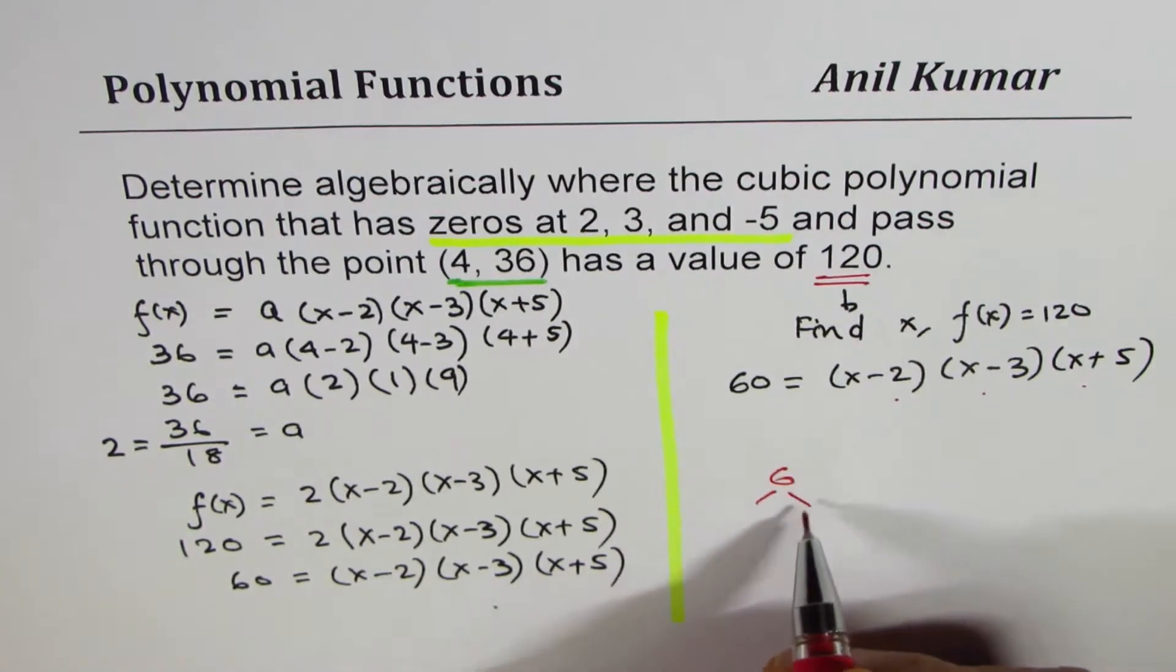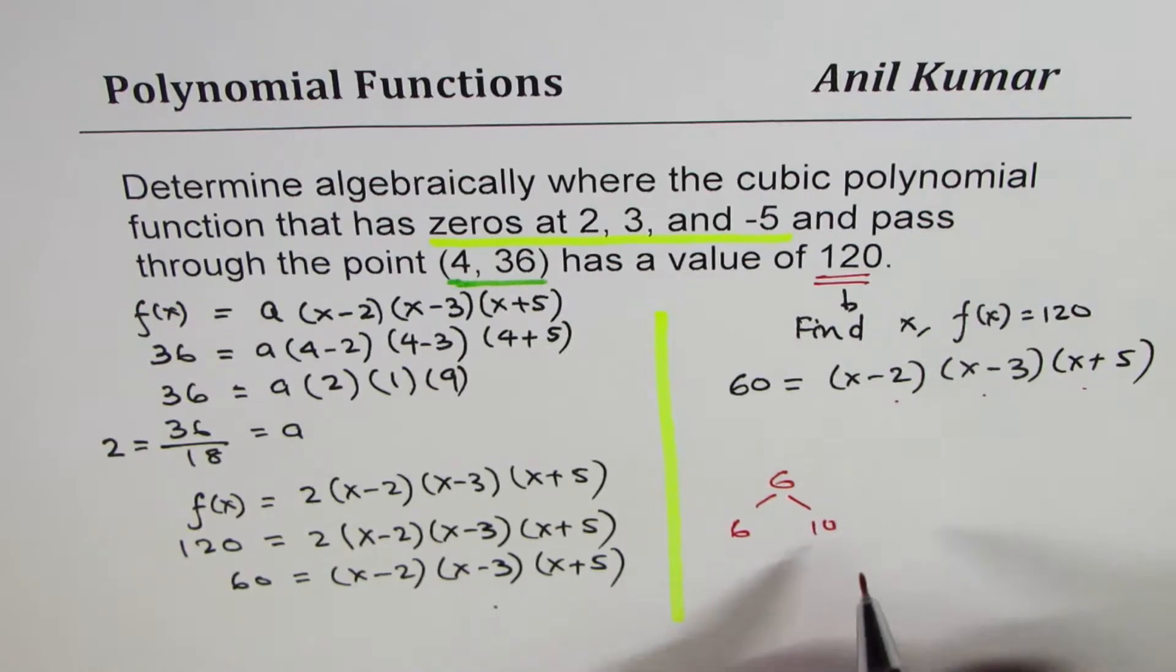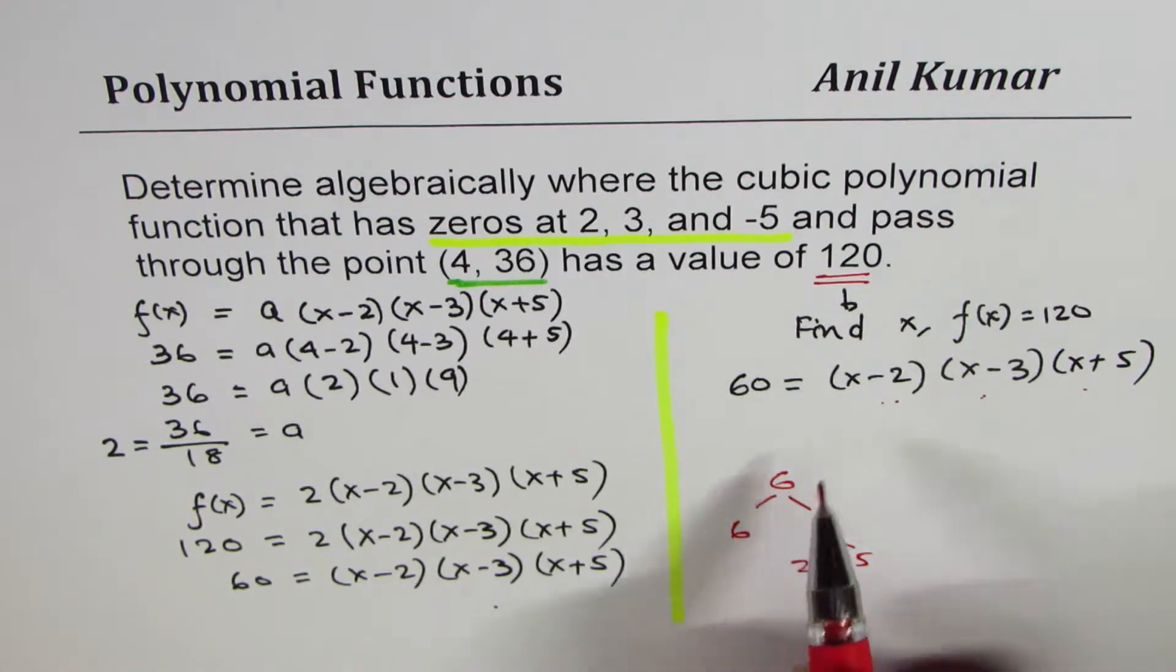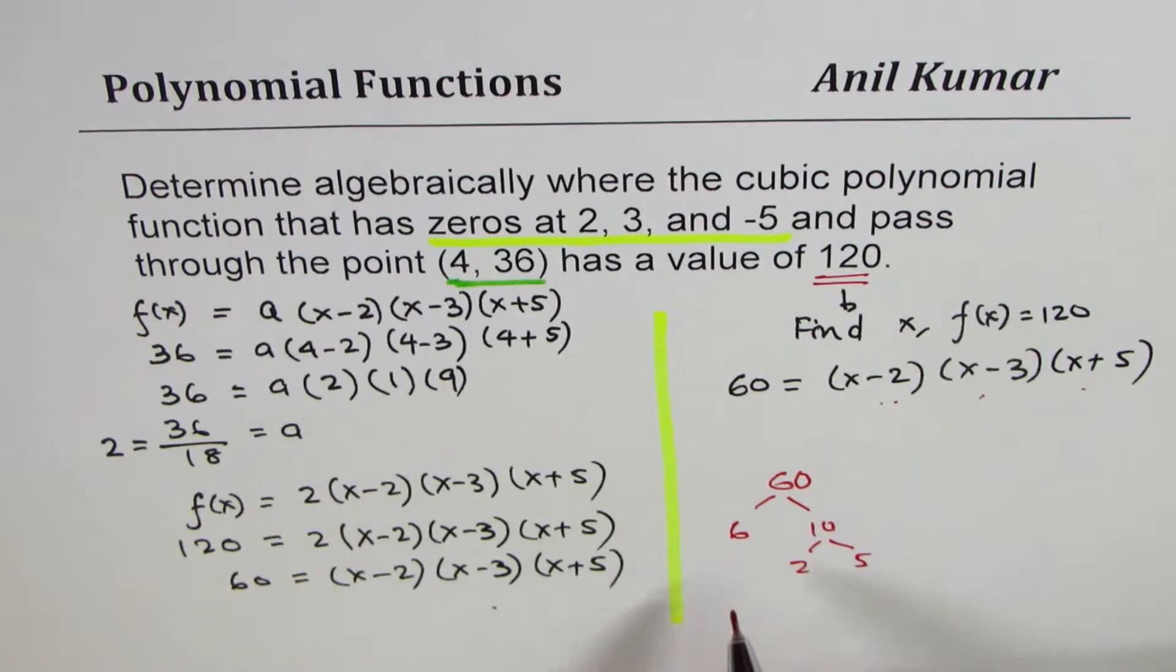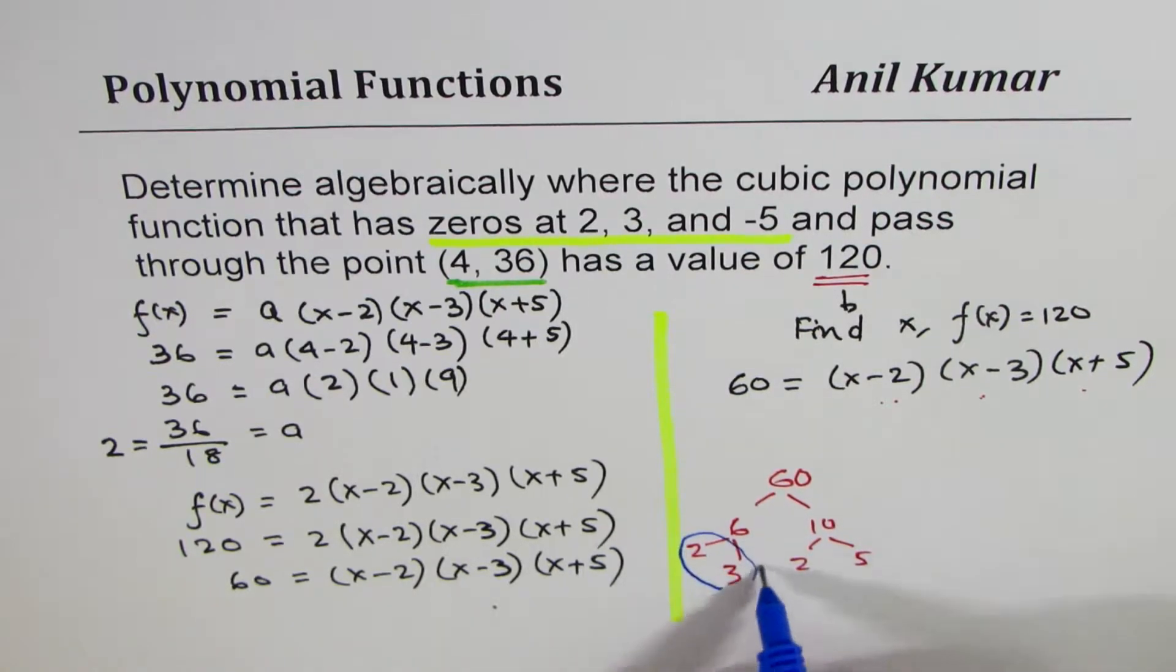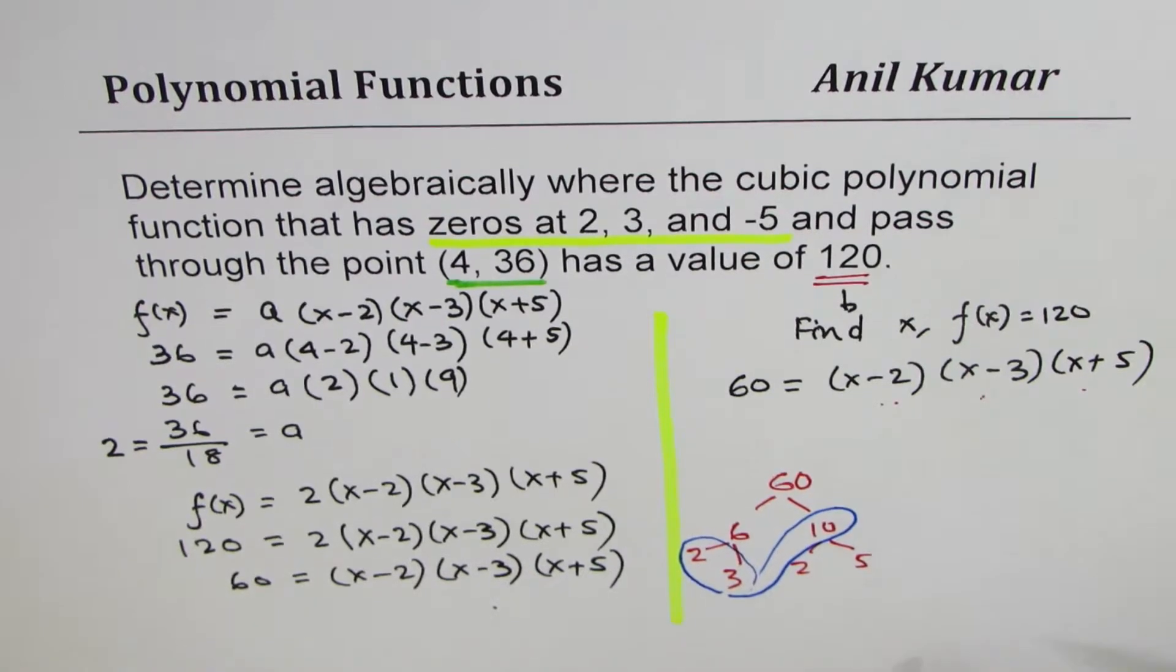60 has factors of 6 and 10. And 10 could be written as 2 times 5, for example. So if I have to multiply three numbers and get 60, then I might as well look for some combination like this, or we could have 2 times 3 and 10, something like this. So we could have this kind of combination.